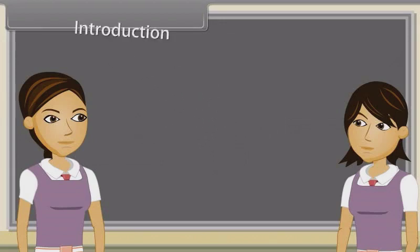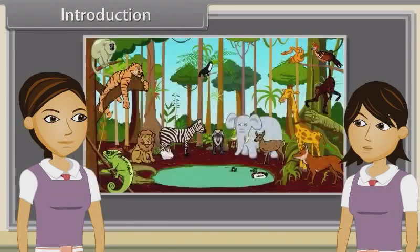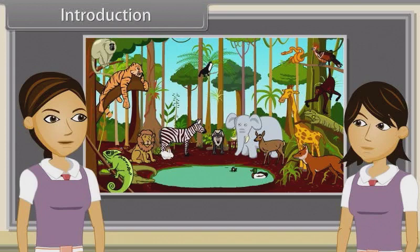Sharmila, in a few words define an animal. Animals are a major group of mostly multicellular, eukaryotic organisms of Kingdom Animalia or Metazoa.